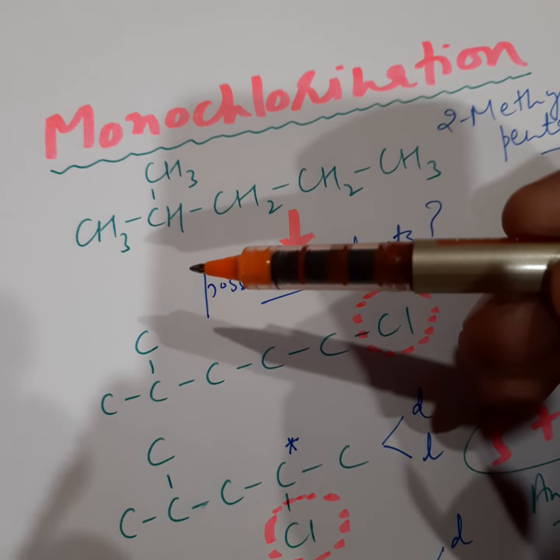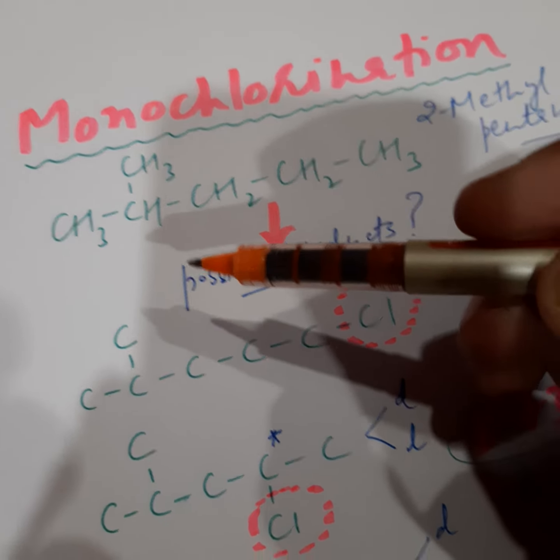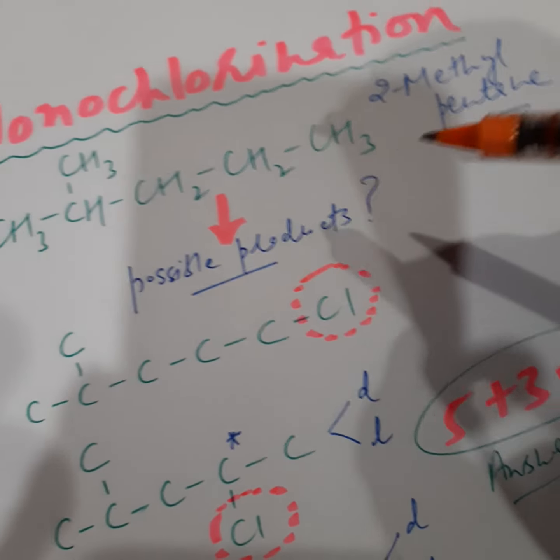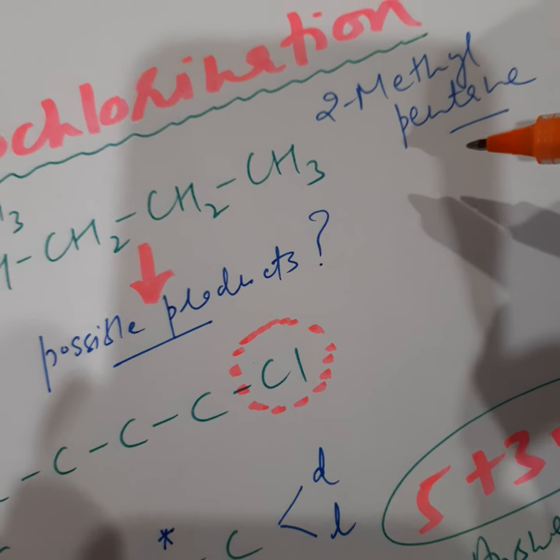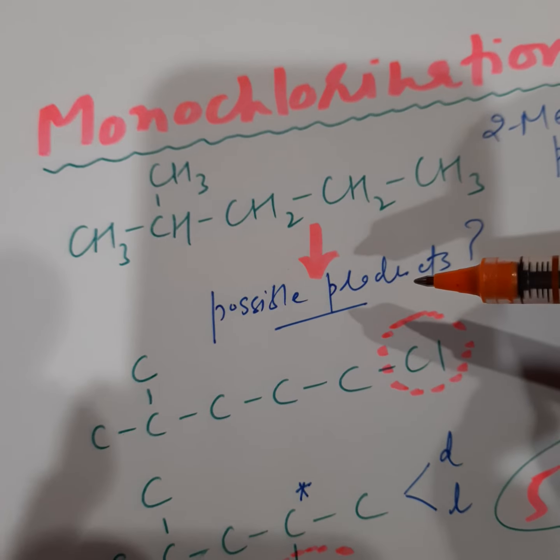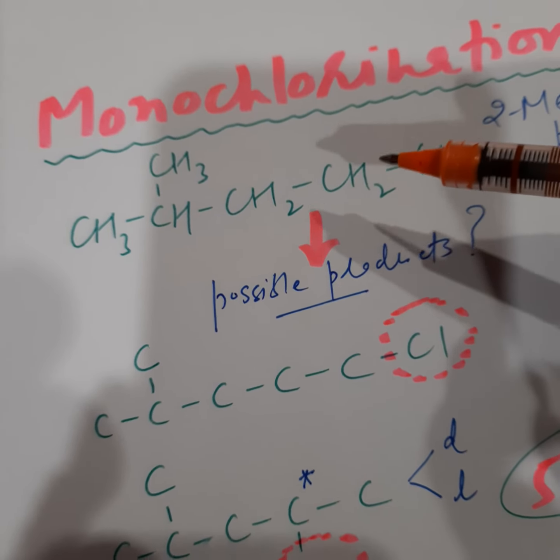Let us talk about monochlorination. It is a very important question. This compound, as you can see, is called 2-methylpentane and the question is what is the number of possible products formed as a result of monochlorination of this compound.